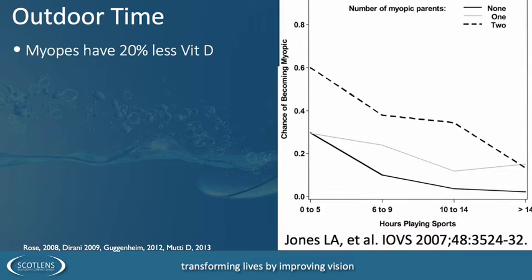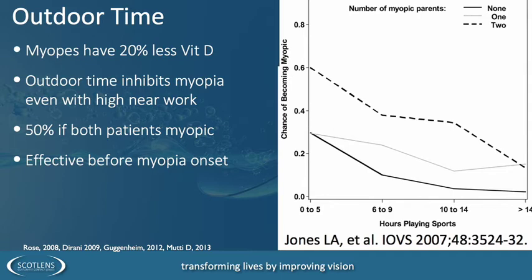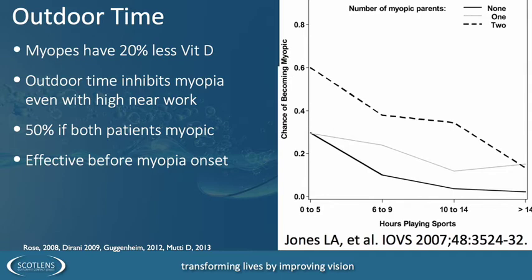Interestingly, vitamin D is not a cause for myopia, but myopes have 20% less vitamin D than emmetropes, spending less time outdoors. We know outdoor time inhibits myopia even in the presence of near work. If both parents are myopic, two hours a day outdoors reduces the risk of onset, bringing it down to equal to having just one myopic parent — quite significant before the age of onset. It's also effective after myopia has developed.